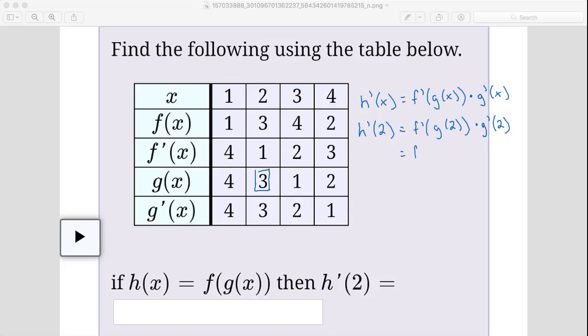That gives us f prime of g of 2 is 3, and then times g prime of 2. Let's go to g prime and where 2 is we find that number that is also 3. So g prime of 2 is 3.